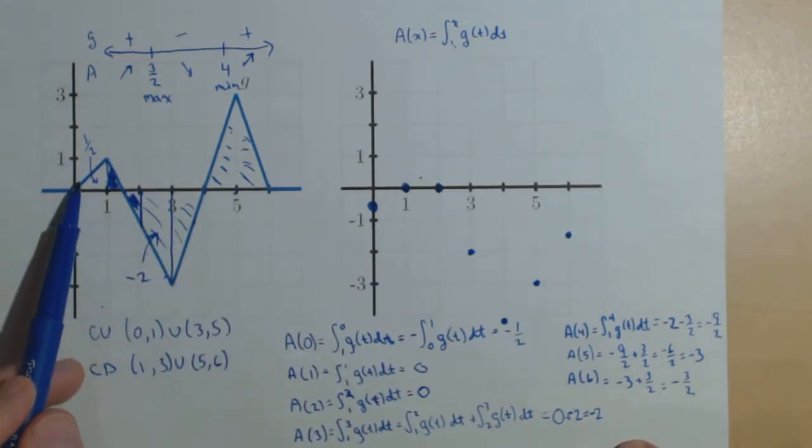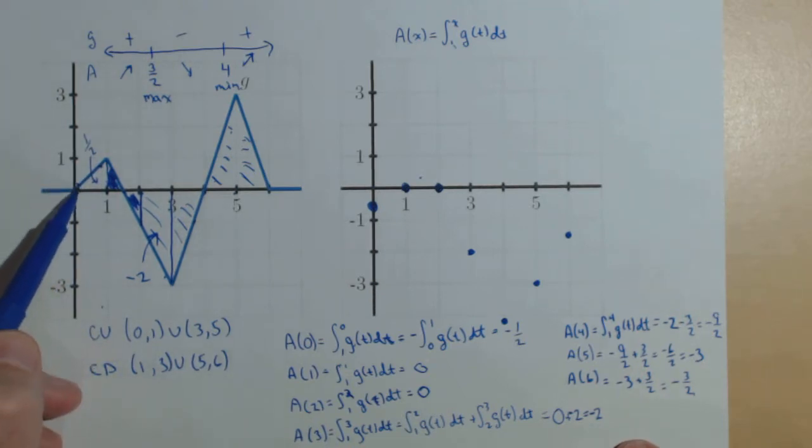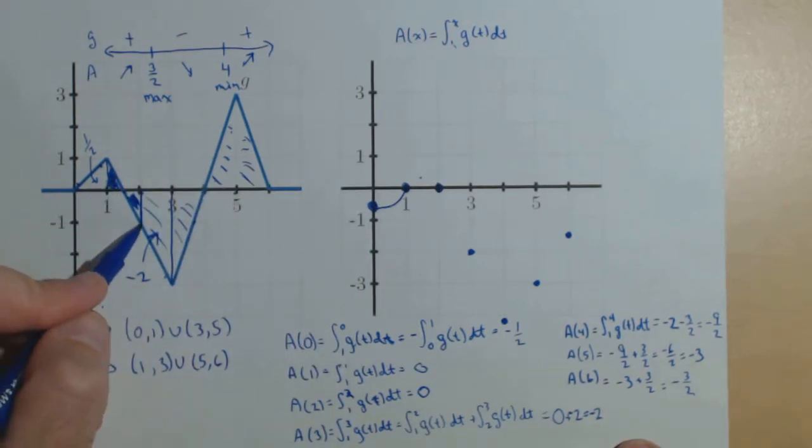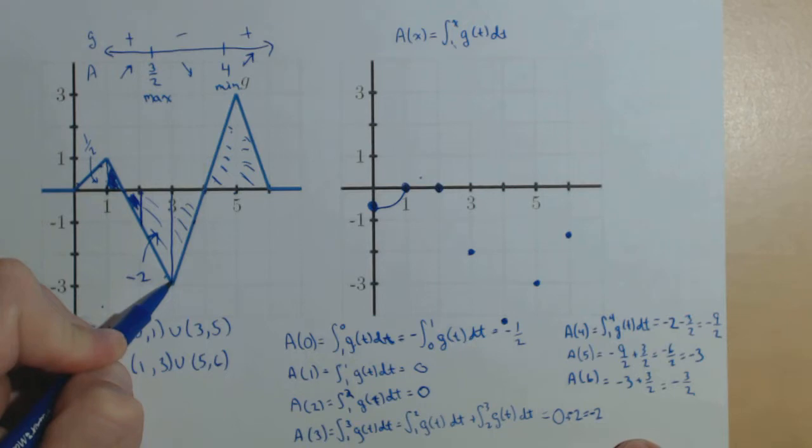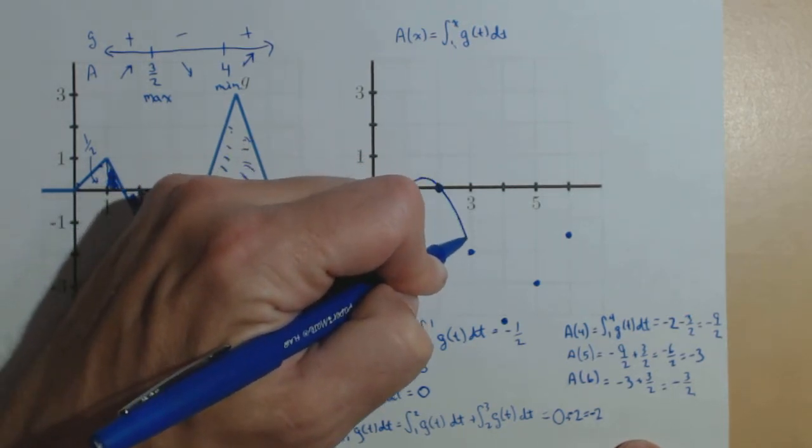Now, notice what we said. It's going to be concave up initially for the increasing rate of change. Then, concave down all the way to 3. So, we're going to see concave down all the way to 3.